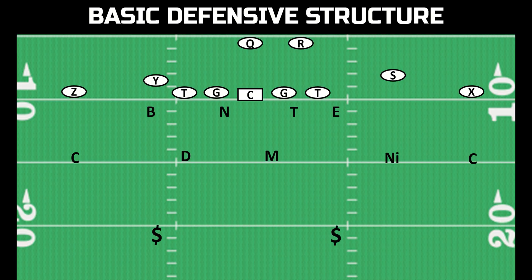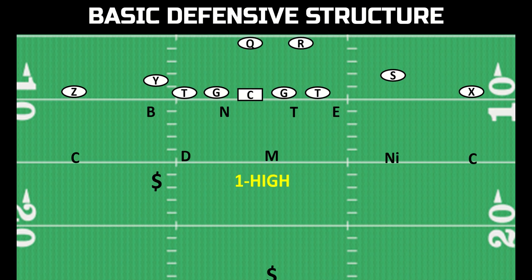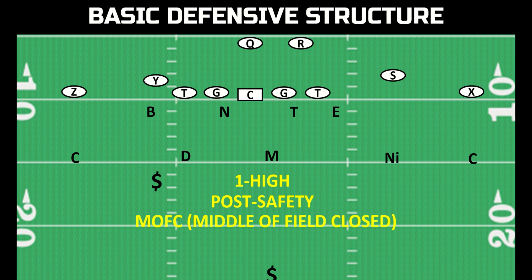The first category involves a safety rotation after the snap. When a safety rotates down and the other one rotates back after the snap, this is called one high. You'll also hear this as post safety or middle of the field closed. Those three terms all mean the same exact thing. It's one high because there's one safety that's high. It's post safety because he's playing in the post — the middle of the field. And it's middle of the field closed because he is closing the middle of the field as a deep safety.